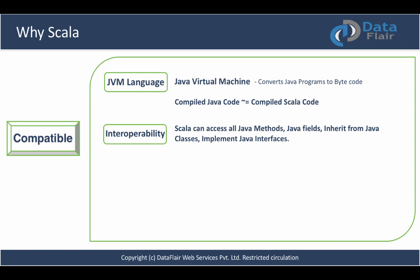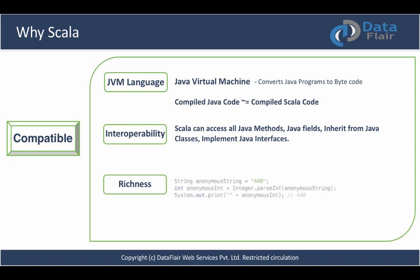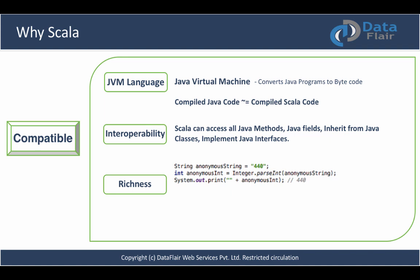Indeed, Scala heavily reuses Java's types such as integers and strings. You will feel good when you get to know that Scala is not only reusing Java's types but also dresses them up to make them nicer and richer. For example, Scala strings support methods like toInt and toFloat, which convert strings to their counterparts. This is not possible in Java and is possible here because of a beautiful concept named implicit conversions.